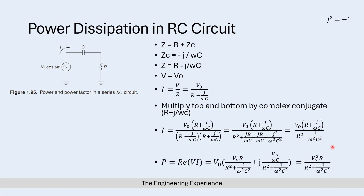Rearranging to show real and imaginary parts separately, we expand to get V₀R plus j·V₀ over omega C, all divided by R squared plus one over omega squared C squared. To find the power dissipation in the full circuit we multiply V and I together. Taking only the real part, we get P equals V₀² times R divided by R squared plus one over omega squared C squared. This is the power dissipation equation for the entire circuit.